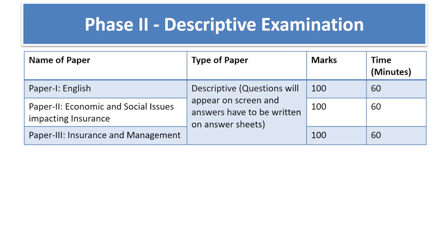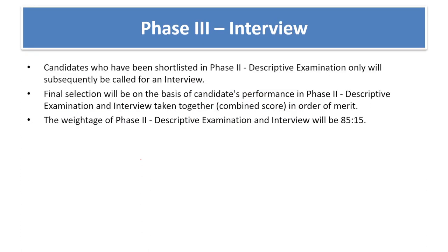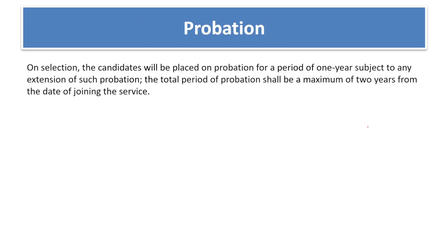Phase 2 is a subjective type paper where you need to write your answers — three papers, 100 marks and 60 minutes each. There is a paper of descriptive English, economic and social issues impacting the insurance sector, and insurance and principles of management. Phase 3 is an interview. The weightage of Phase 2 is 85% and 50% weightage is for the interview. There is also a two-year probation period.